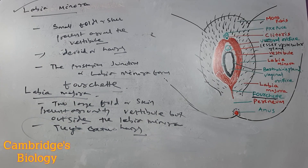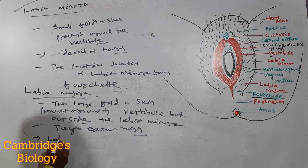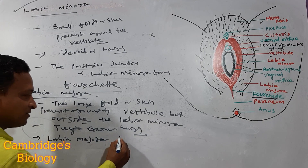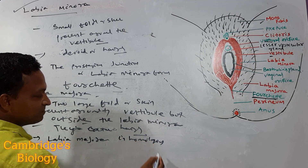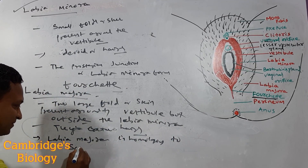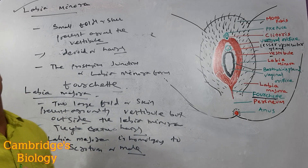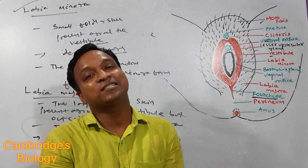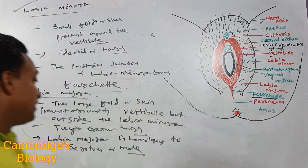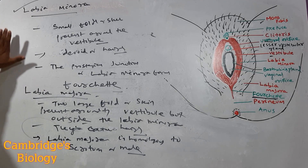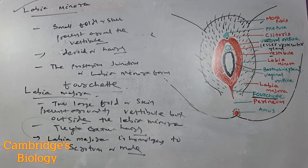Labia majora is homologous to the scrotum of the male. The scrotum is a pouch-like structure which holds the testes in case of the male. So labia majora is homologous to the scrotum of men. These are the basic fundamentals about labia minora as well as labia majora.